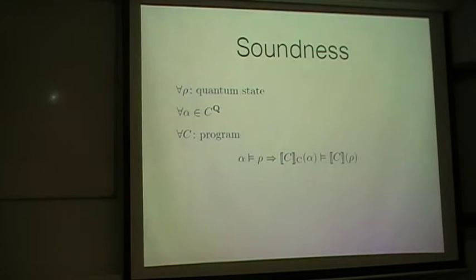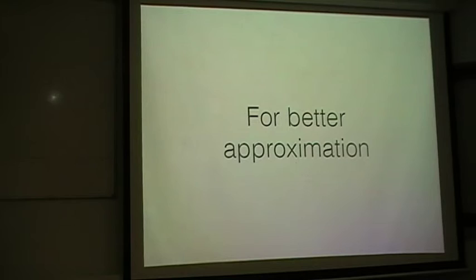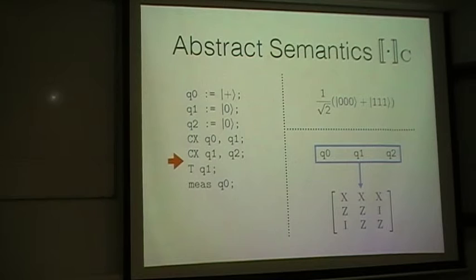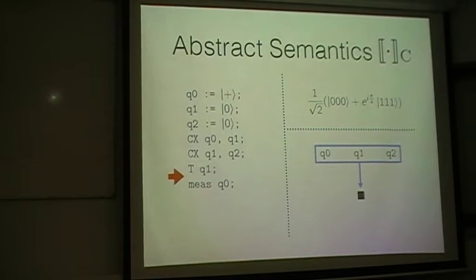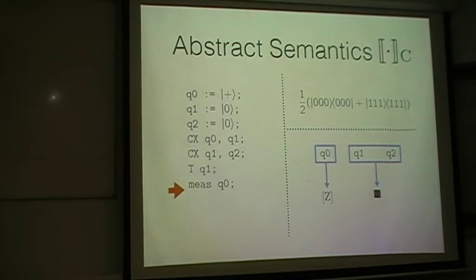We also proved the soundness of these semantics, meaning the semantics is valid. And as shown in the previous examples, this is a strict improvement of the previous semantics. Now let's try to get a better approximation. In this example, we create the GHZ state, and then the non-Clifford gate T is applied. So in our abstract semantics, the state of Q0, Q1, and Q2 is changed into the non-stabilizer symbol. Then measuring the zeroth qubit, we conclude that Q0 is separated, but Q1 and Q2 may be entangled. However, the concrete semantics shows they are all separated. So how can we improve this analysis?